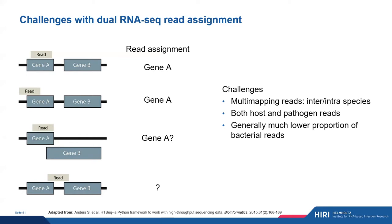These multi-mapping reads are a bit of a challenge, especially when we concatenate the genomes for dual RNA-seq studies — we've got inter- and intraspecies challenges. This illustration on the left-hand side applies to both host and pathogen reads. Depending on the infection ratio, generally we have a much lower proportion of bacterial reads in the sample, so it becomes really important to try and assign as many bacterial reads as possible, and as accurately as possible.